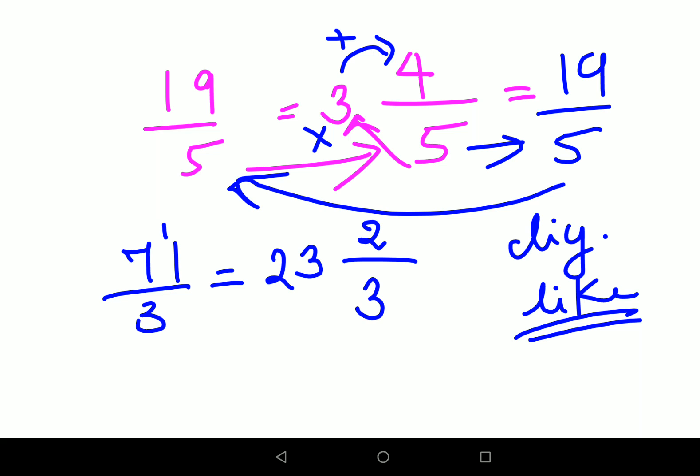And your 3 gets carried forward. You can just cross verify: 23 into 3 gets you 69 plus 2 gets you 71 upon 3. That is your improper form.